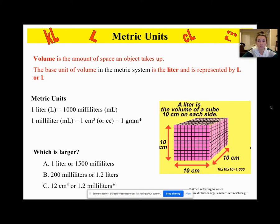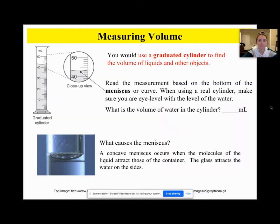And then let's do our which is larger. Do you have your chart? Look in your notes. Okay, A, one liter or 1500 milliliters? 1500 milliliters, good. B, 200 milliliters or 1.2 liters? 1.2 liters, great. C, 12 centimeters cubed - okay so that's the same as 12 - or 1.2 milliliters? 12 centimeters cubed. I kind of helped you with that one.